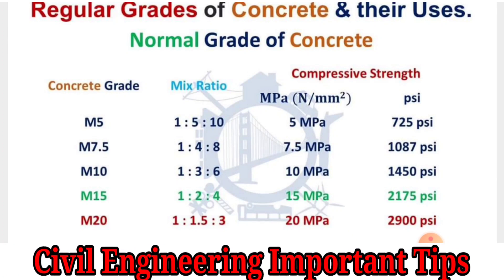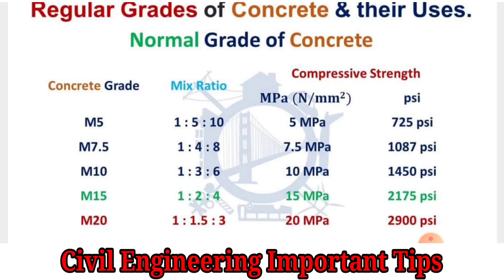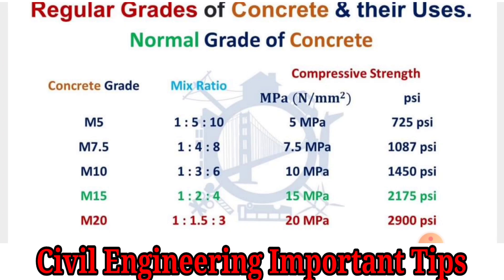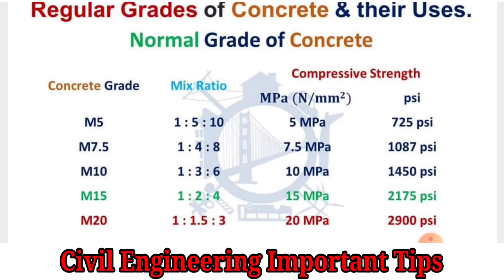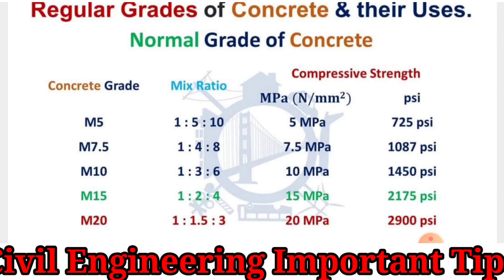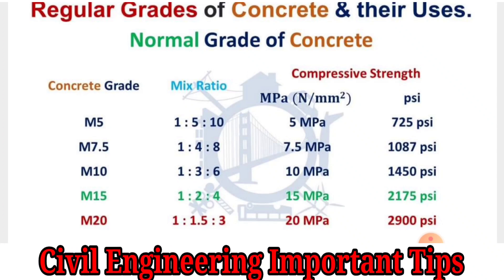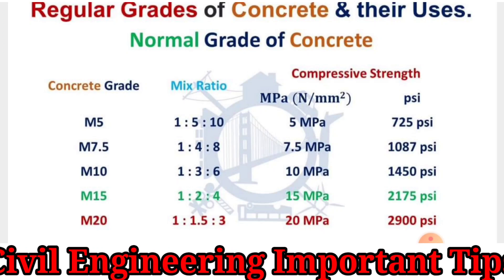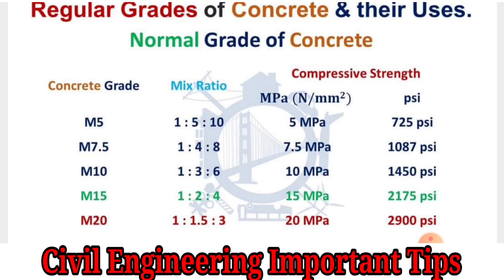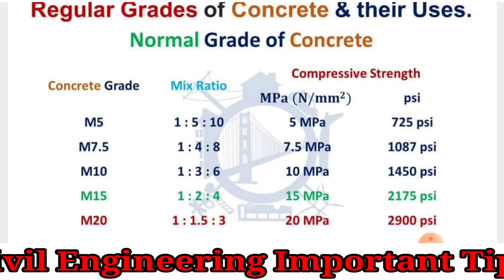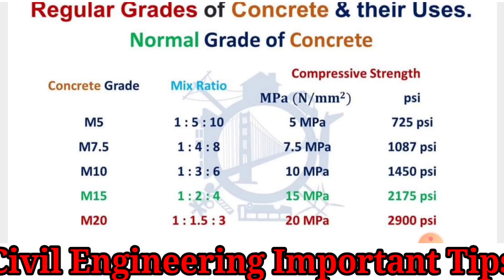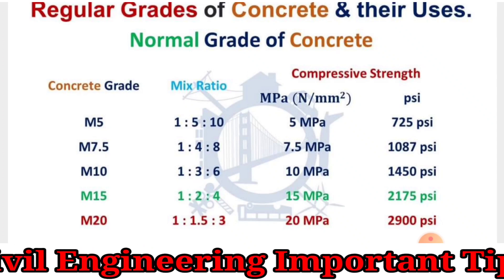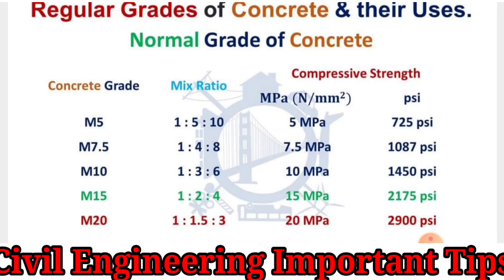For M15, the ratio is 1:2:4, with a compressive strength of 15 MPa. For M20, the ratio — CSA, Cement Sand Aggregate with admixture — is 1:1.5:3. Here, M means mix ratio and the number indicates compressive strength in MPa.